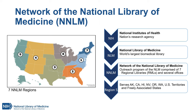The image on the right shows the relationship between the NNLM, the National Library of Medicine, and the National Institutes of Health. Hawaii is in NNLM Region 5, along with Alaska, California, Nevada, Oregon, Washington, and the U.S. territories and freely associated states of the Pacific.